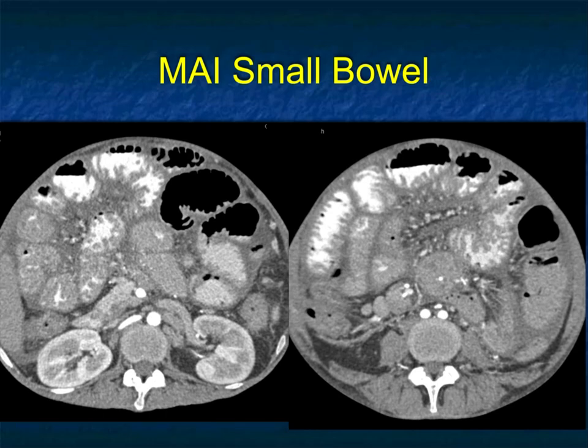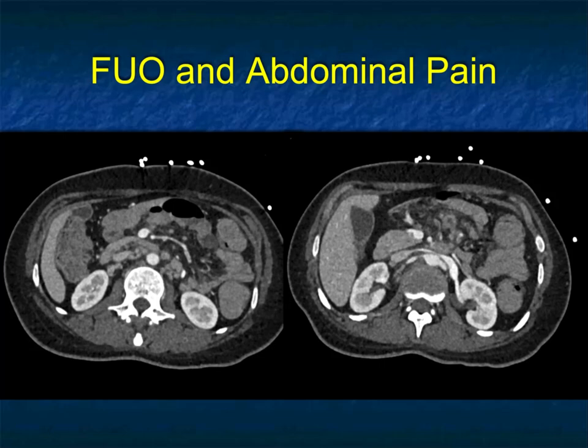MAI in the right population — usually HIV or AIDS patients — you're thinking about MAI. MAI gives you mesenteric nodal masses. Often the nodes are of low CT attenuation; that can be helpful. Here it's not really low attenuation unless you have a vivid imagination, but MAI is a possibility and something to think about.